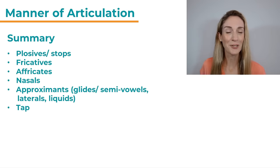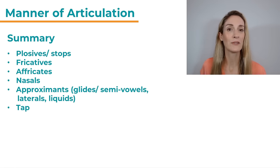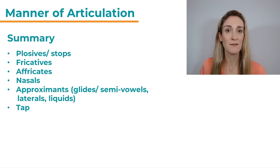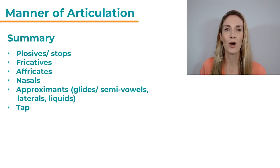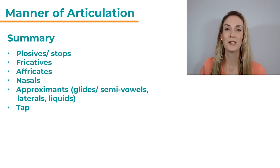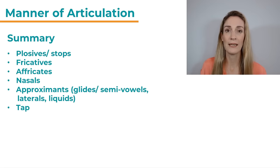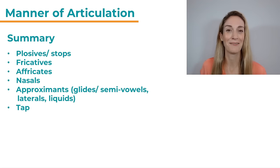Here's a summary of the different manners of articulation for all the sounds in English. We have plosives, also called stops; fricatives — both big groups; affricates, a combination of plosives with fricatives, with only two sounds; three nasals; four approximants, divided into subgroups of glides or semi-vowels and laterals, also called liquids; and finally one tap sound, the flap T.